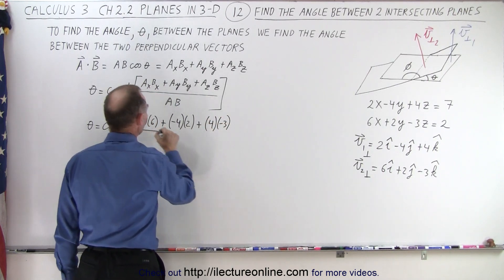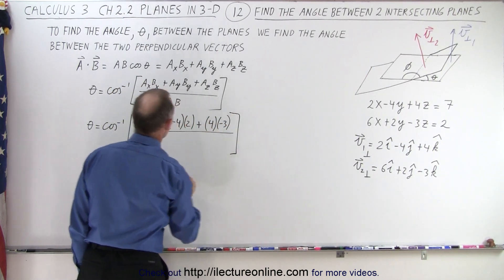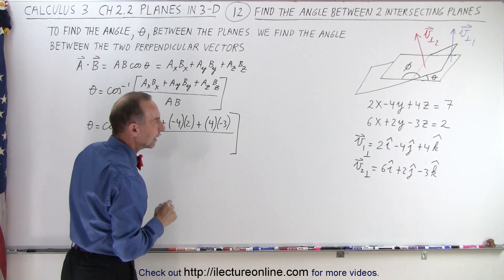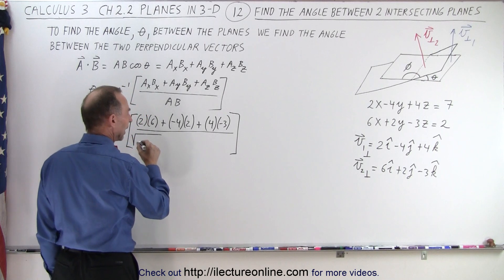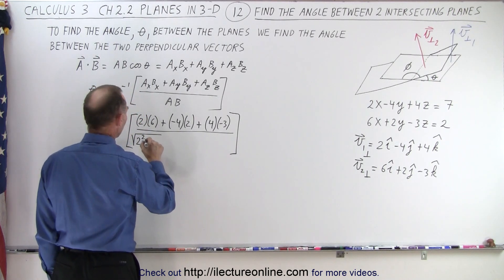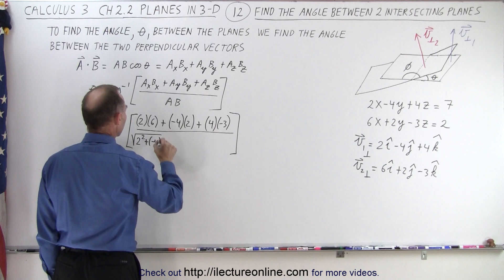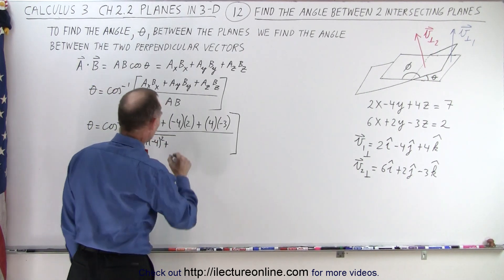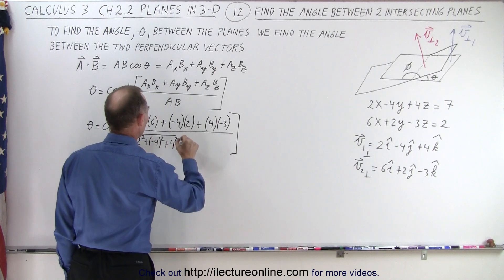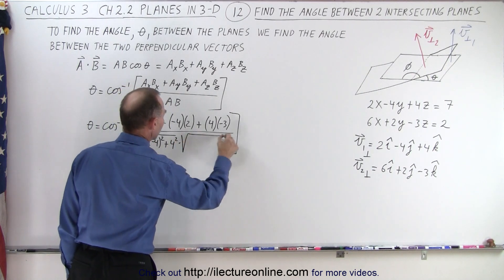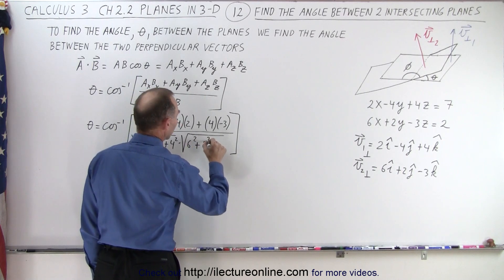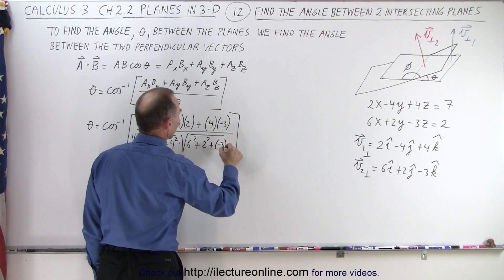And we're going to divide it by the magnitudes, so in this case we're going to take the square root of the X, Y, and Z components squared added together, so that's 2 squared plus negative 4 squared plus 4 squared, and we're going to multiply that times the square root of 6 squared plus 2 squared plus negative 3 squared.